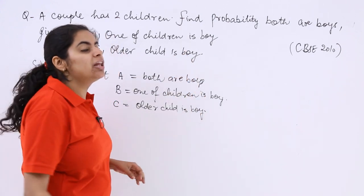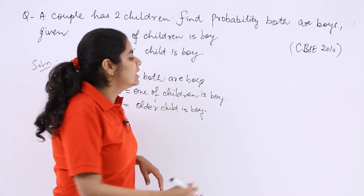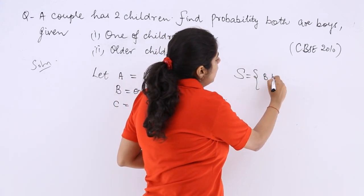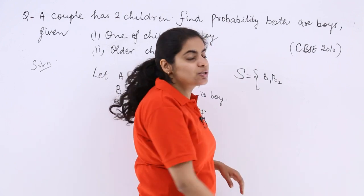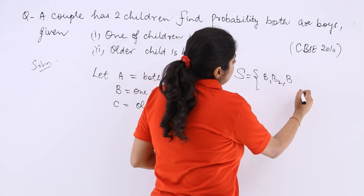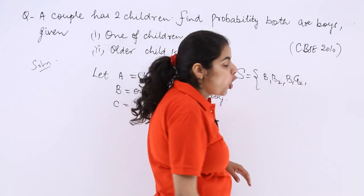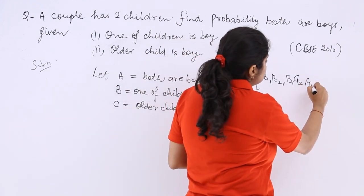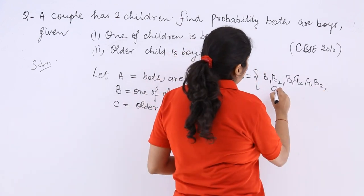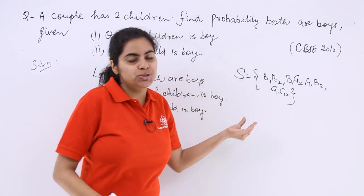Now, there will only be two outcomes: either a boy or a girl. So the sample space is: both are boys (BB), first is a boy and second is a girl (BG), first is a girl and second is a boy (GB), or both are girls (GG).